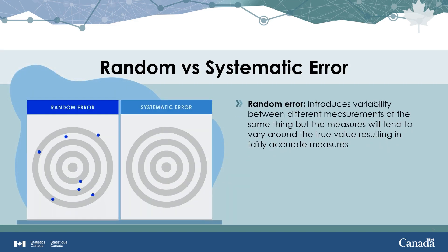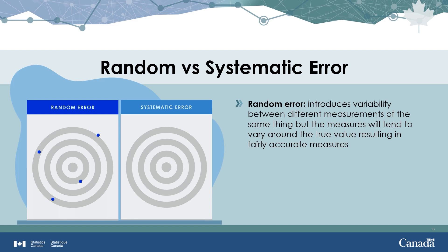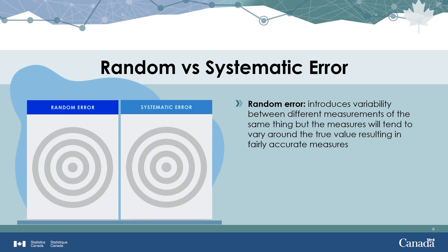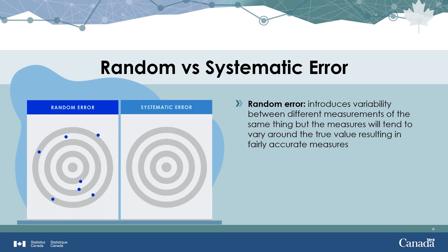Random errors introduce variability between separate measurements of the same thing. For example, responses or measurements taken at different times can result in response variability, or another randomly selected sample can result in sampling variability. Randomness can also occur in the data processing procedures. Nevertheless, in these cases the measurements still tend to cluster around the true value, and despite some error, they are still accurate.